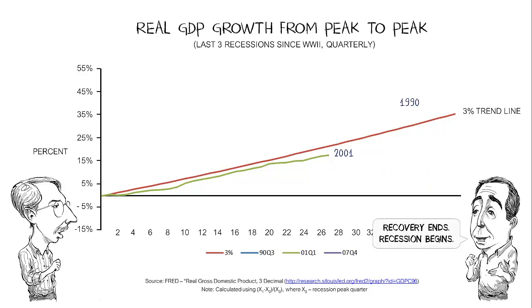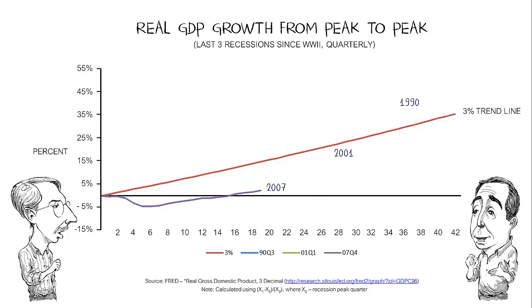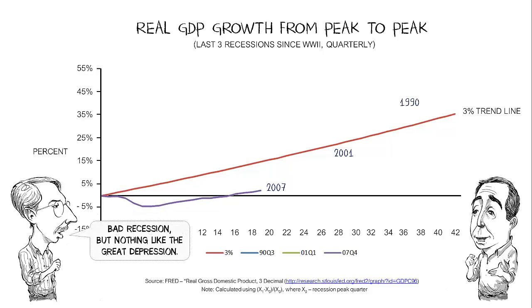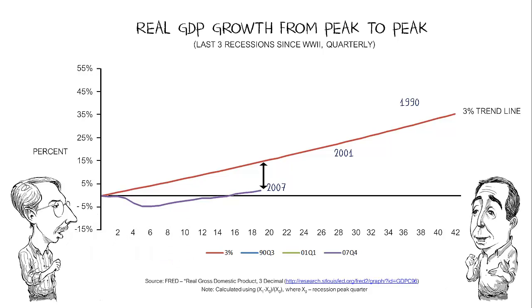The current one is worse in terms of its depth than the ones we've had before, but not so much more — this is a 5% decline. But that's nothing like the Great Depression, so we should stop the trash talk about this being the worst recession since the Great Depression, because although it's technically true, it's rhetorically very misleading. This is a little worse than before, but what's different compared to the first eight is there's absolutely no recovery. If anything, the gap between the 3% trend line and where we are is getting bigger, because we've had only 2% growth, not 3% growth.